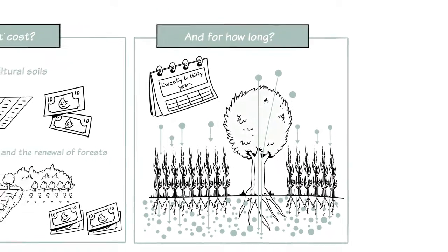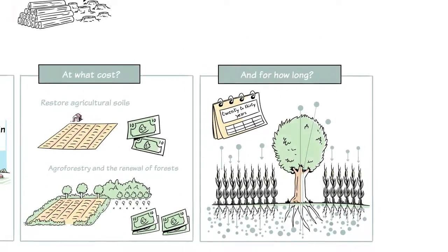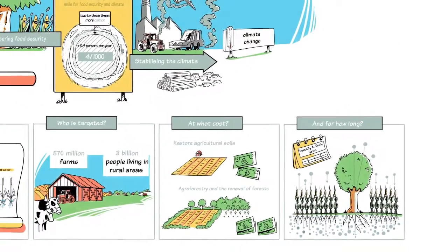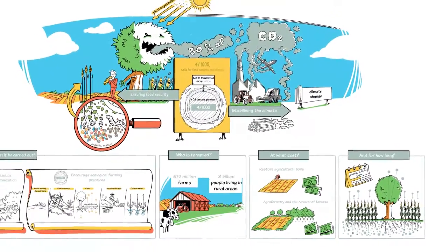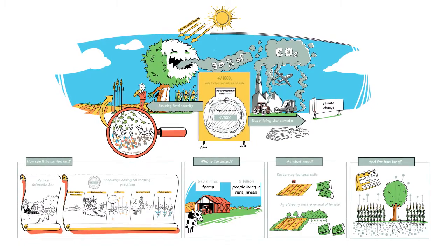Under the 4 parts per thousand initiative, researchers are coming together with farmers, associations, economic stakeholders, regions and countries for the purpose of food security and climate.